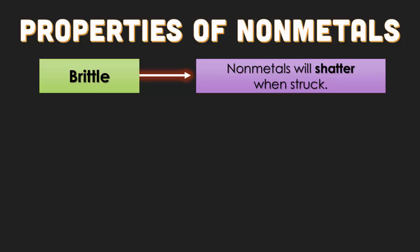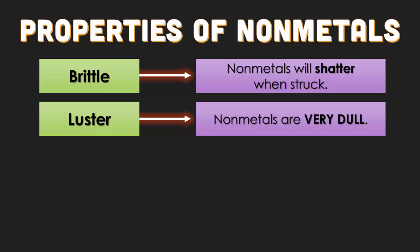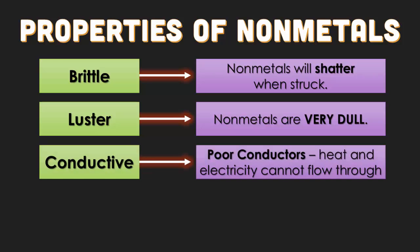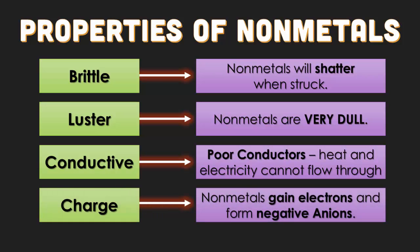Properties of non-metals: non-metals are brittle when they are solid, so that means they will shatter when struck. Their luster is very little — they're very dull. They do not conduct electricity or heat very well; some can conduct electricity, but not to the extent of metals. When non-metals turn into ions, they will always gain electrons and form negative anions — they gain electrons during a chemical reaction and form negative ions.